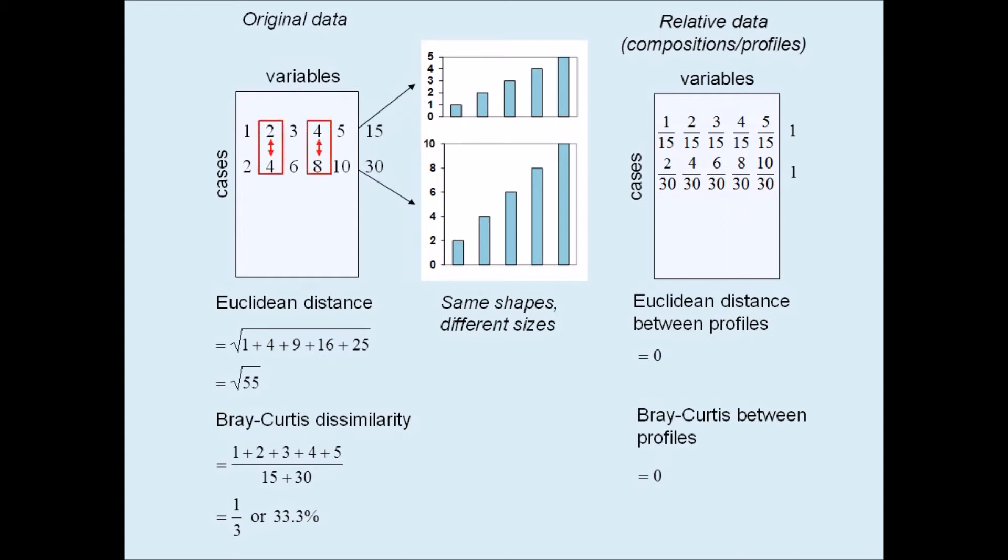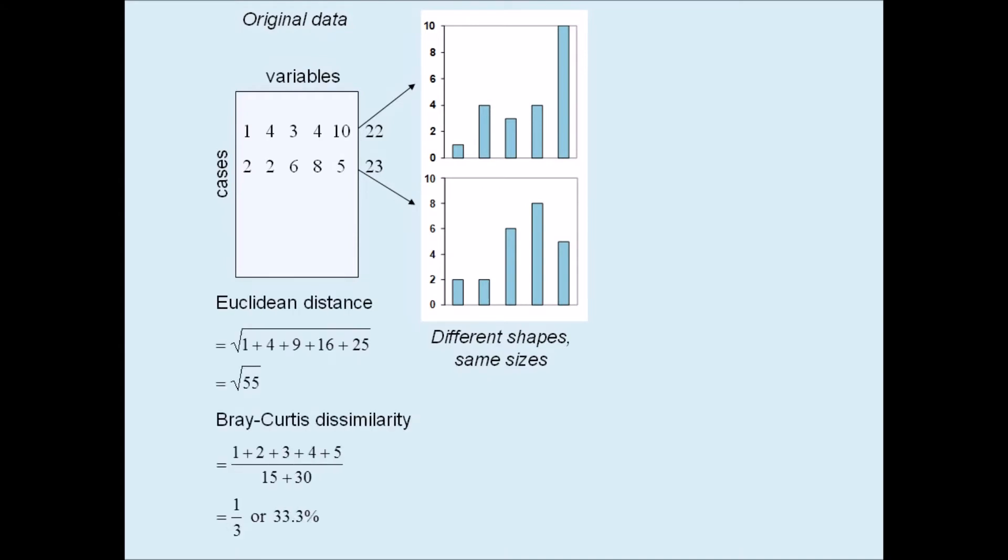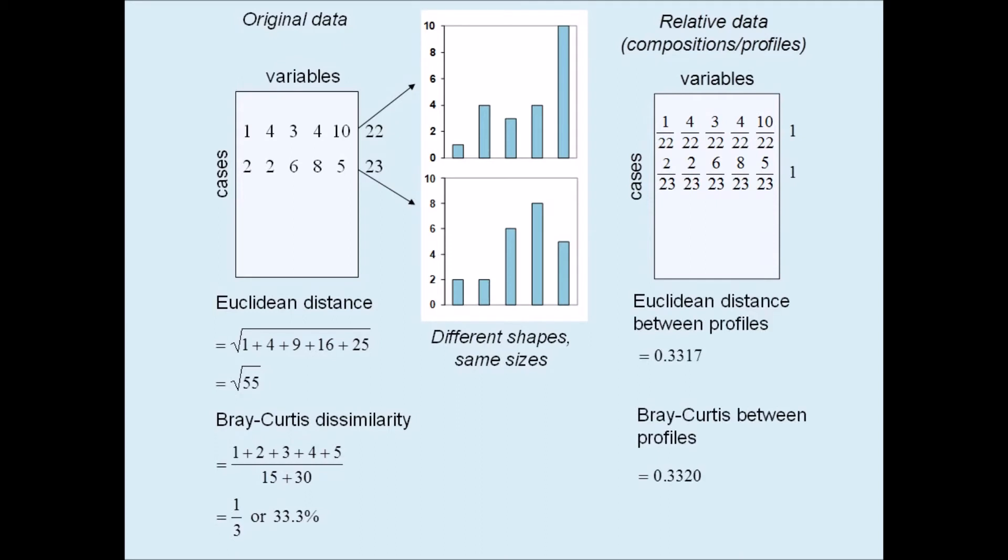Now let's make a simple change in the data, by interchanging the values in the second and fourth columns between the two samples. The two sets of counts now have different shapes, but almost identical sizes. Since the individual differences between the two samples have not changed, the Euclidean distance and Bray-Curtis dissimilarity are still the square root of 55 and 1/3 respectively. The proximity measures between the profiles are now no longer 0. Notice that in this example the Bray-Curtis has behaved practically identically to the Euclidean distance, even though the Euclidean distance would never be chosen by ecologists as a proximity measure between sets of counts.